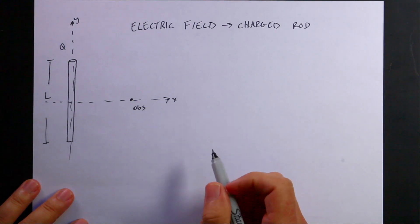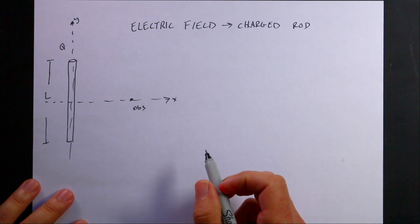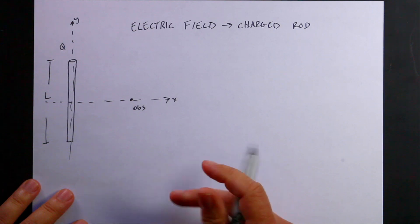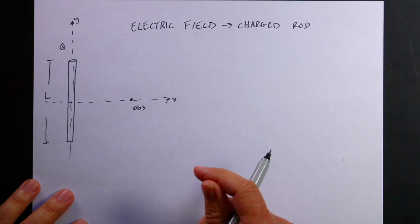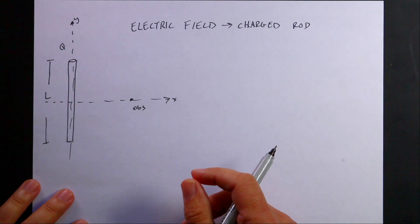This is a classic question in electricity and magnetism: how do you find the electric field due to a charged rod? Why would you want a charged rod?